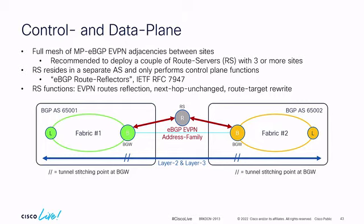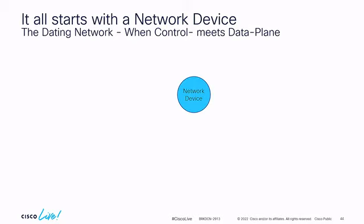Think about it: 128 sites, six border gateways per site — full mesh means a massive number of BGP sessions to set up by hand. A route server in the middle — always deploy two for redundancy — solves that. NDFC — Nexus Dashboard Fabric Controller, previously DCNM — automates both full mesh and route server configuration completely. VXLAN EVPN is like a dating network: where the control plane meets the data plane, we get routes and tunnels.